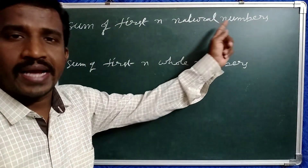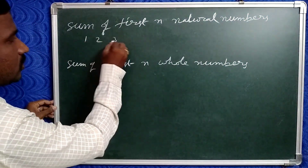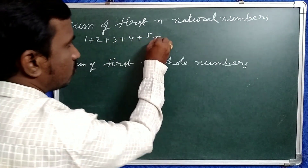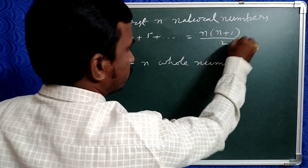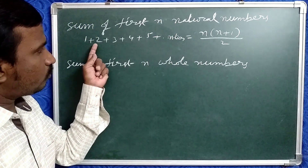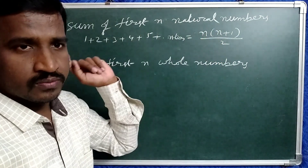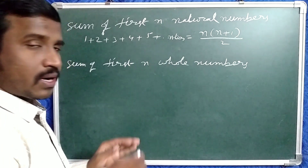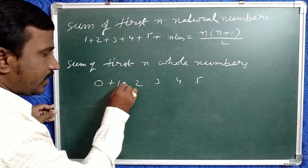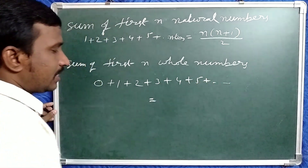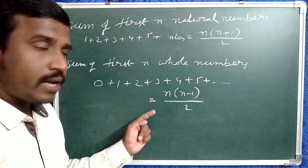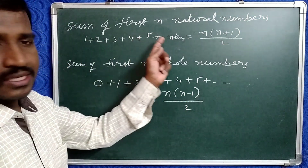Now take the sum of first n natural numbers. Natural numbers are 1, 2, 3, 4, 5 and so on. The sum 1 + 2 + 3 + 4 + 5 + ... equals n(n+1)/2. This is the formula for the sum of first n natural numbers. For whole numbers starting from 0: 0, 1, 2, 3, 4, 5 and so on. The sum of first n whole numbers equals n(n−1)/2. So sum of first n natural numbers = n(n+1)/2, and sum of first n whole numbers = n(n−1)/2.